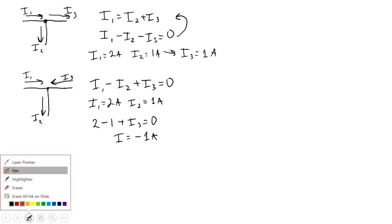That just means the sign or direction you initially picked for I3 is wrong, and it turns out you actually have a current of 1 amp flowing out of the node instead of in.